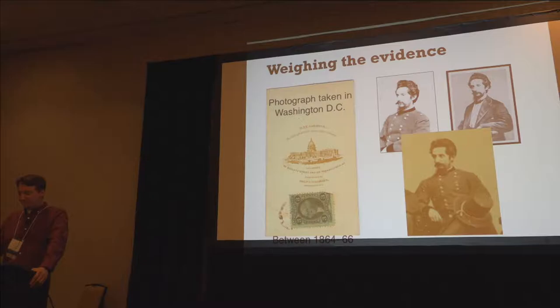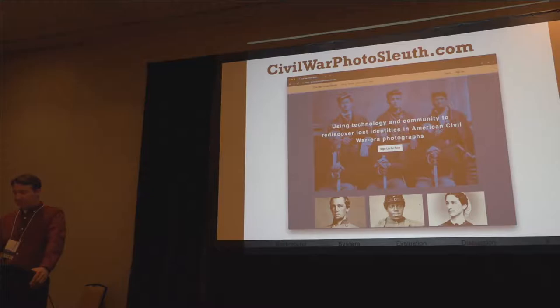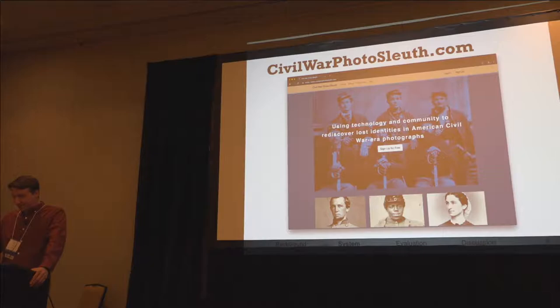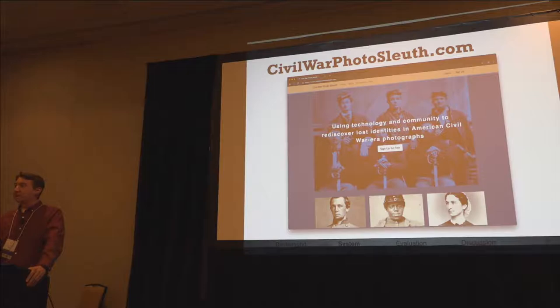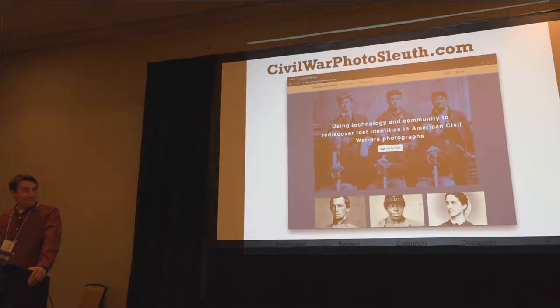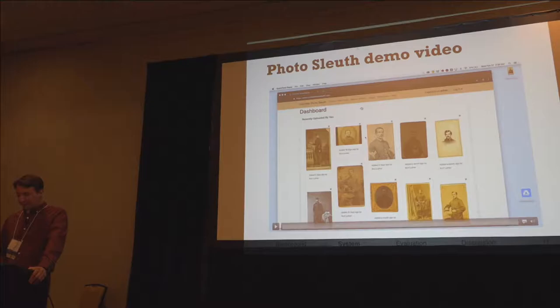There are clearly a lot of different challenges at different stages of this process. What we wanted to do is support it by creating a website that combines crowdsourcing and face recognition technology. On this site, there are a bunch of different things you can do — identify photos, search the site for names of relatives or people from a particular state, or add photographs to help increase the reference database. Initially, we seeded the site with over 17,000 identified photographs of Civil War soldiers, mostly from public collections.